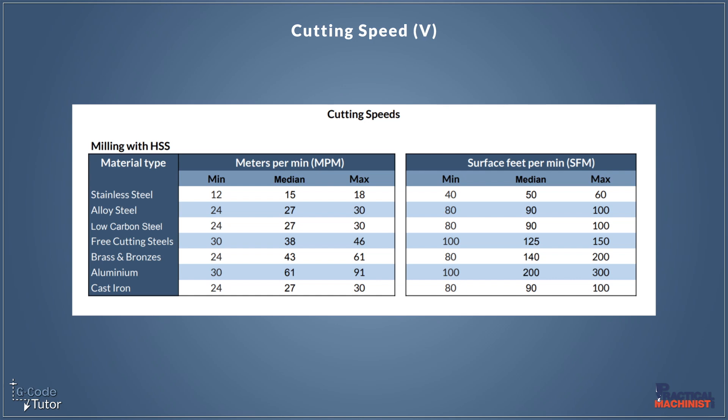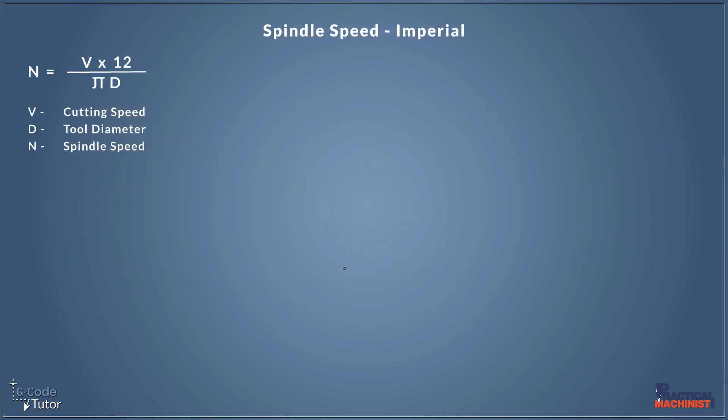So let's do a quick calculation. Let's just do a quick one so we know where we're coming from, and let's work in imperial. So if we take our top line again, stainless steel, and we look at our imperial side, our surface feet per minute, I'm going to use a median size of 50 surface feet per minute for our calculation. So V would equal 50, and that's where I'm getting this number from.